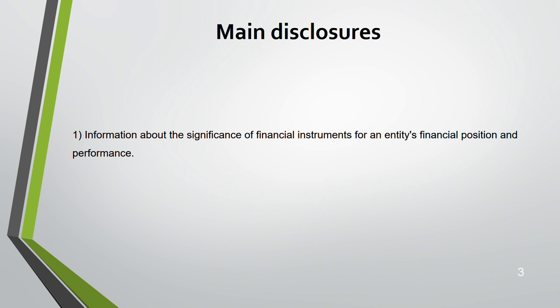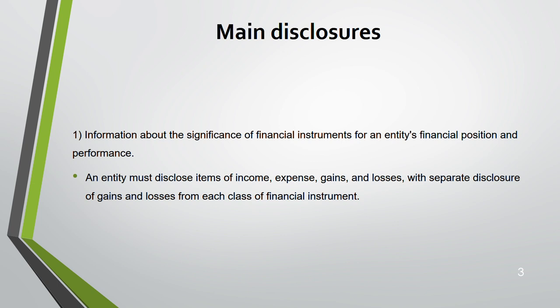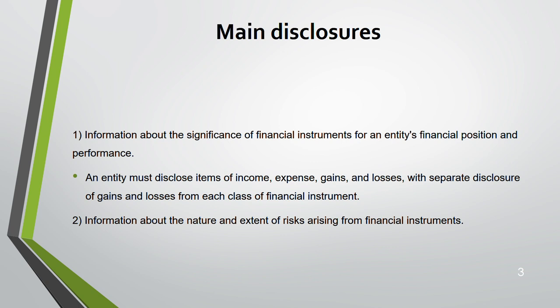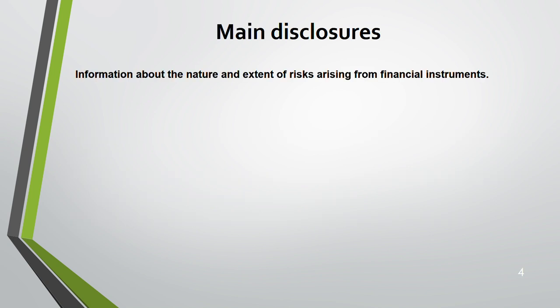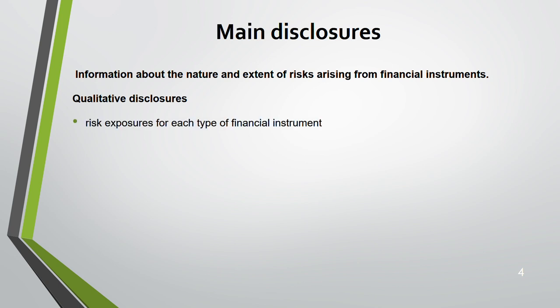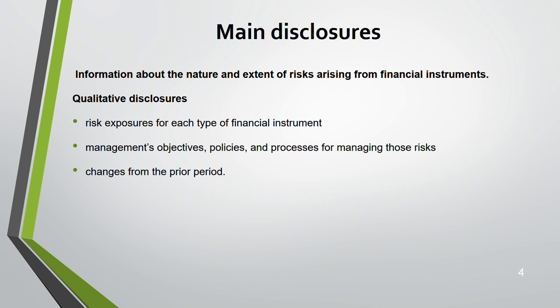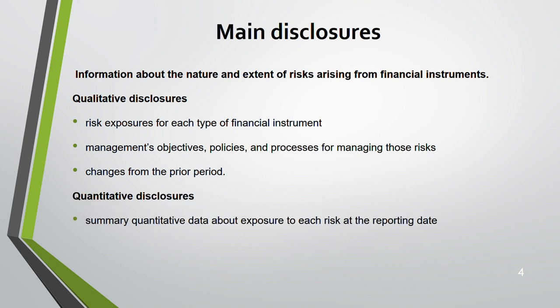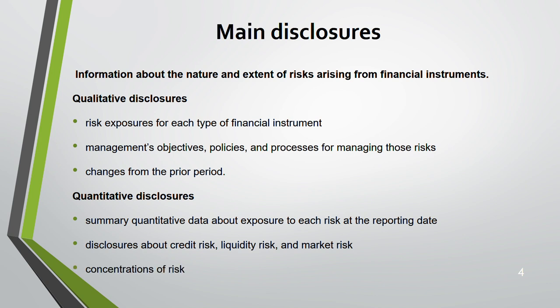Under IFRS 7, you need to disclose the significance of financial instruments - income, expense, gain and loss - with separate disclosure from each class of financial instrument. Next, you must give information about the nature and extent of the risk arising from financial instruments. There are two types: qualitative disclosure and quantitative disclosure. Qualitative covers risk exposure from each type of instrument, management's objectives and policies in managing risk, and changes from the prior period. Quantitative covers a summary of data about exposure to each risk, including credit risk, liquidity risk, market risk, and concentrations of risk.